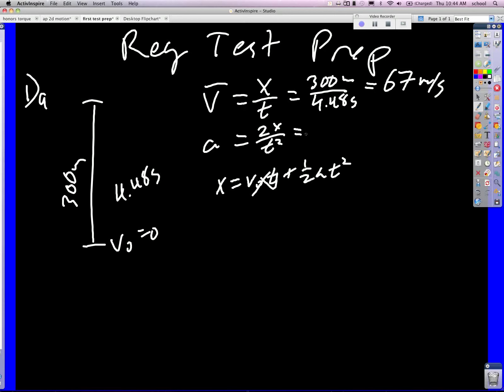So we know the average velocity to be 67 meters per second. So the question is, when is the instantaneous velocity 67 meters per second? Or when is v final 67 meters per second?